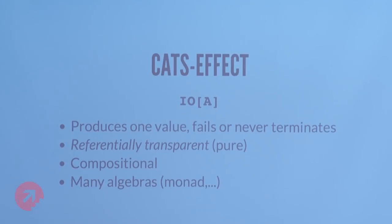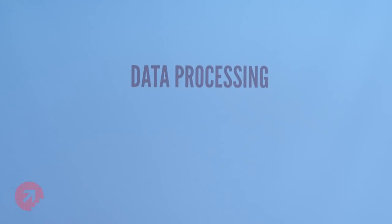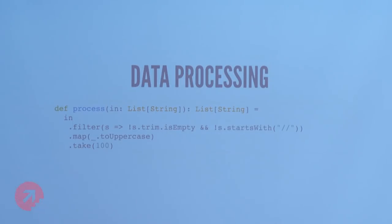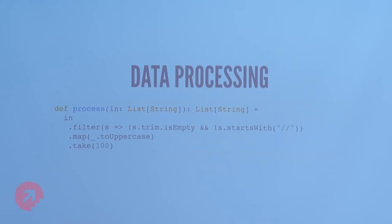Let's look at an example of data processing using IO. I have a very simple algorithm — a data pipeline — that takes a list of strings and returns another list of strings. What it does is filter out empty strings or comments, transform all of them to uppercase, and take the first hundred. This is nice and compositional because each part makes sense on its own. But now let's say I want to read this list from a file, and if I were to do this with side effects, I would lose that compositionality.